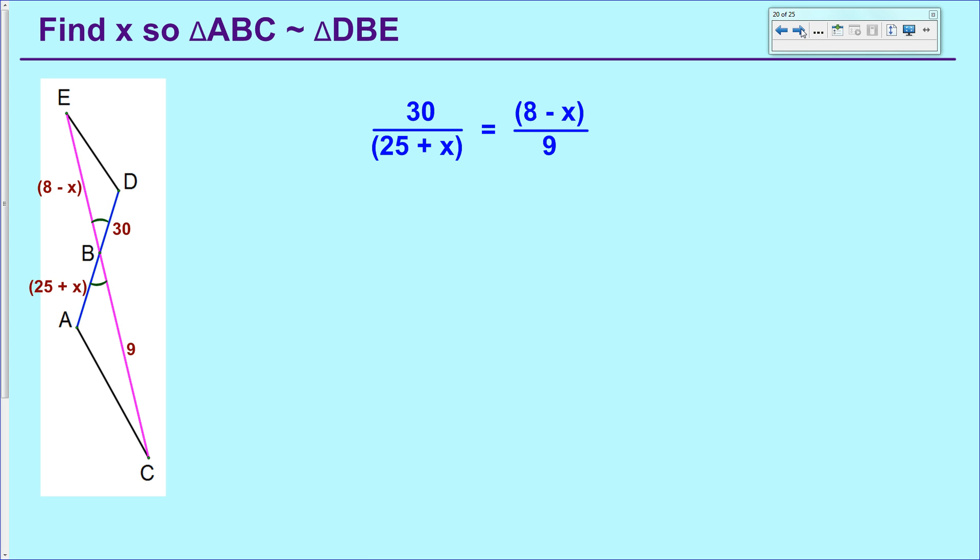From there, do cross products again. This time you are multiplying a pair of binomials, which means that you're going to have to FOIL. Once you FOIL, you'll have to combine like terms a little bit. So the next two steps look like that. And then we get a number equal to a trinomial.